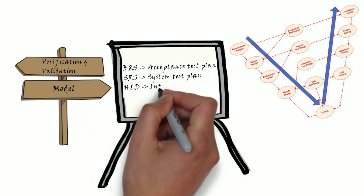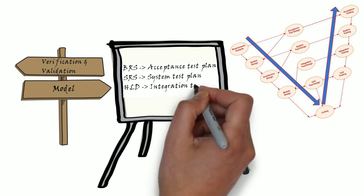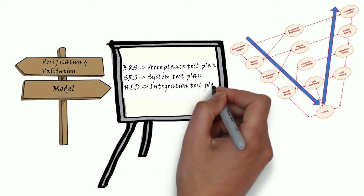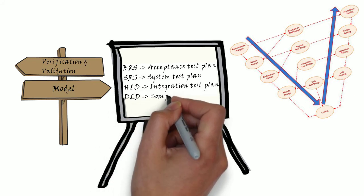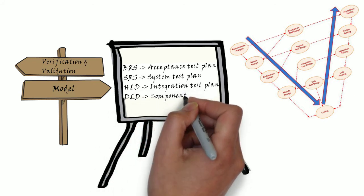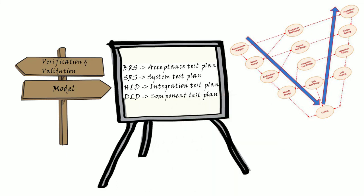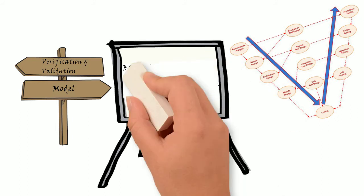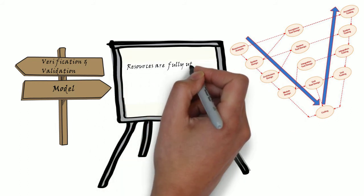When HLD or high level design document is prepared from development side, integration test plan and test cases for integration testing would be done from testing side. Likewise, detail level design document is prepared from development side, component test plan and test cases for component testing would be prepared from testing side. So each of the development activity has a corresponding testing activity as well. The resources are fully utilized here.